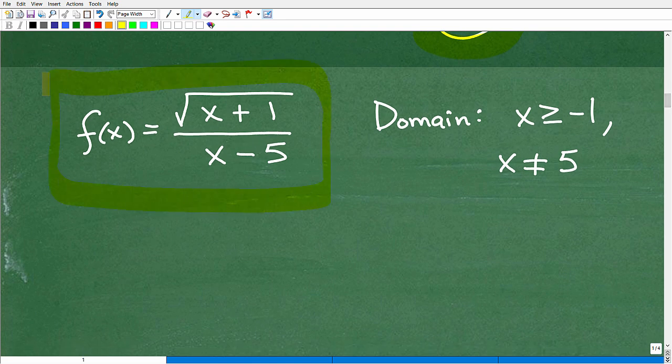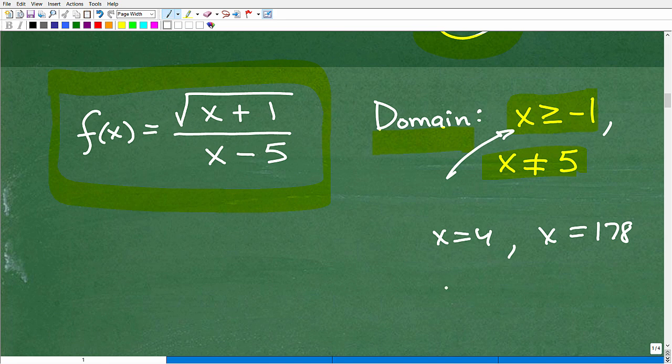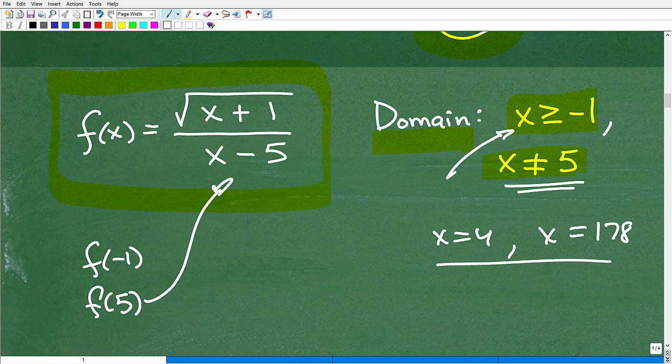Now we just have to describe this mathematically, and that is going to be the domain of this function. Here is our function again. There's all kinds of different ways you can describe the set of values that are in the domain. This is an easy way - we'll say all x's that are greater than or equal to negative 1, and then you can just say excluding x cannot be 5. This is a perfectly simple, direct way to describe the domain. You plug in any value that's greater than negative 1 - maybe x is 4 or x is 178 - you're going to be good to go. I cannot have f of 5 because that will blow up my function.